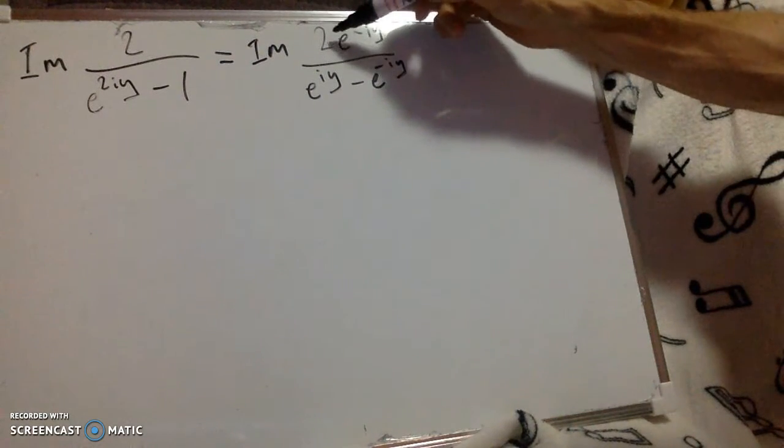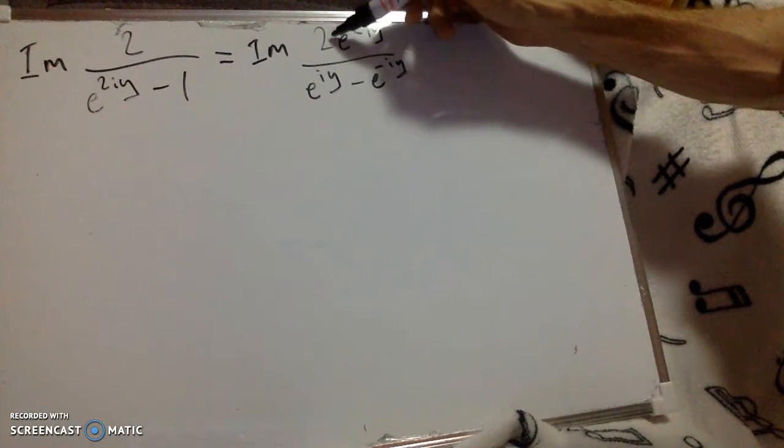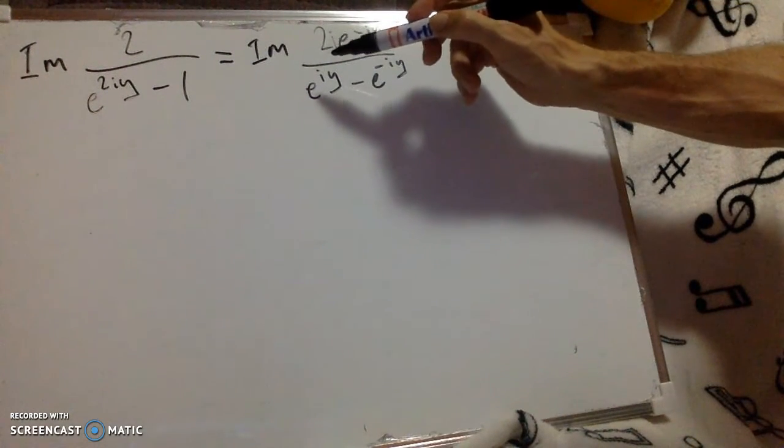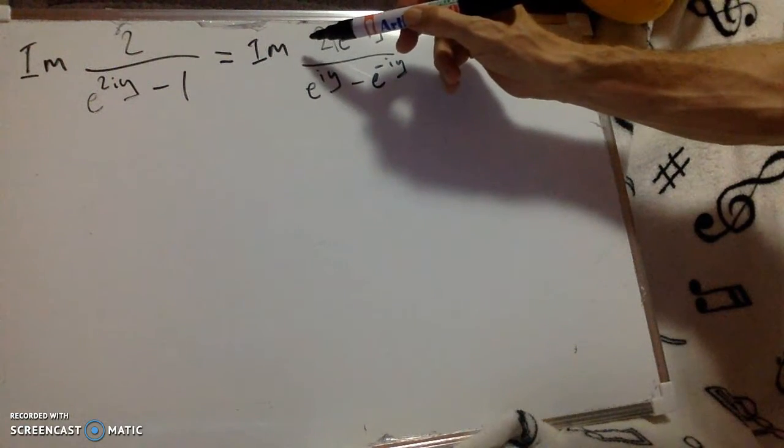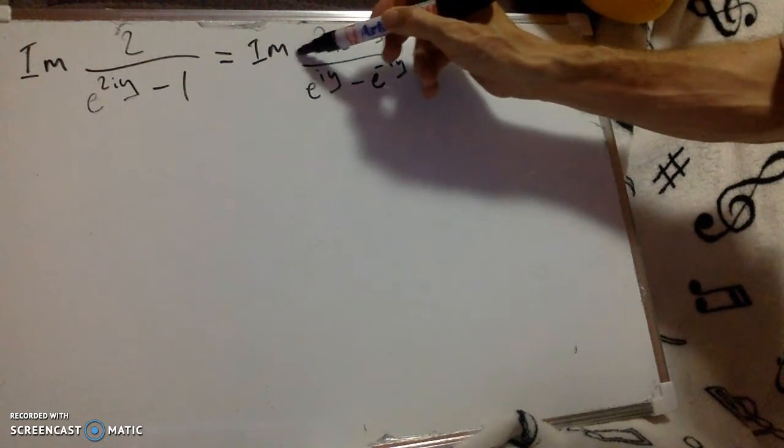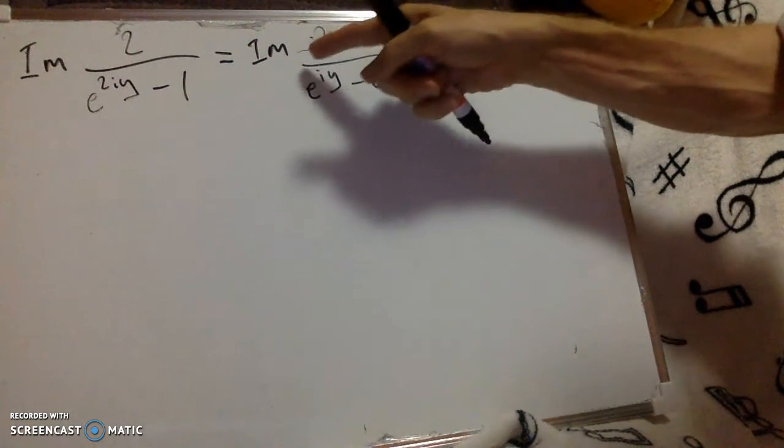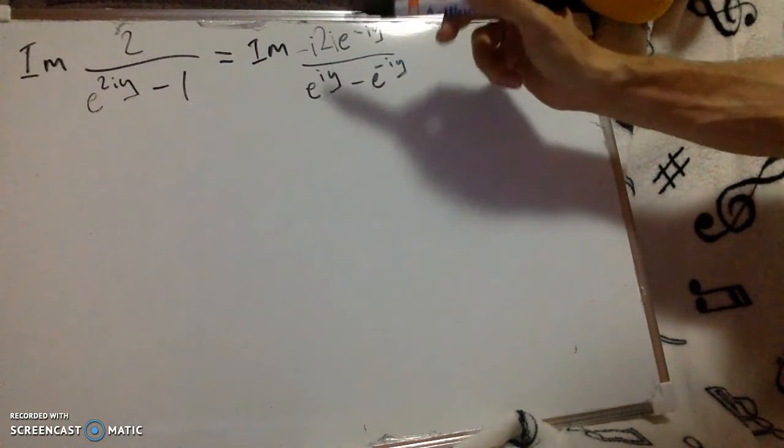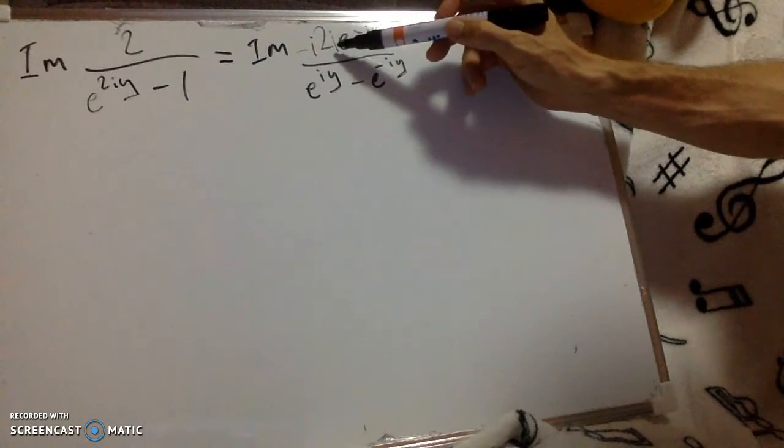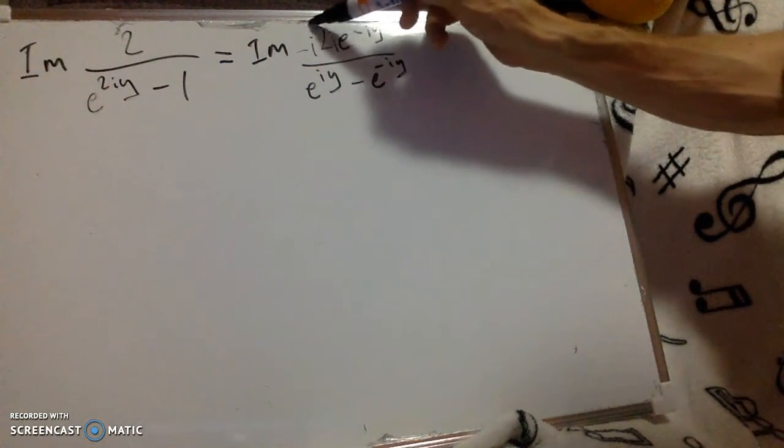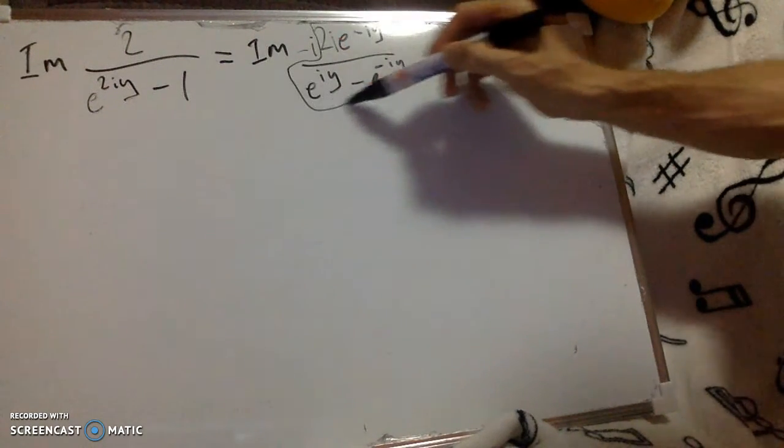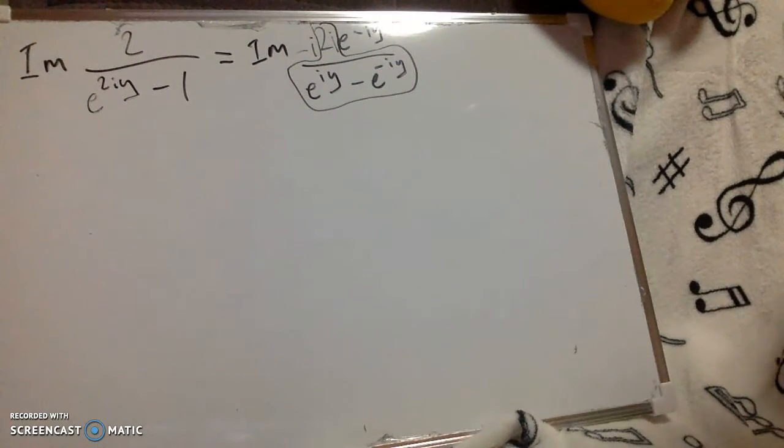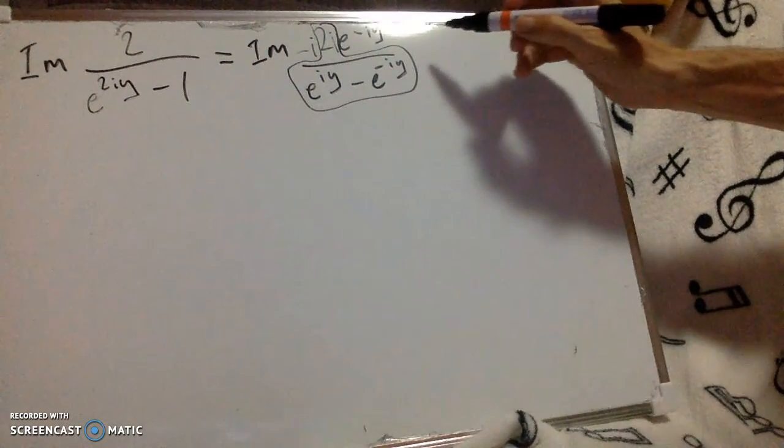So if we multiply top and bottom by i, so I'm going to shove an i in here, and I can then multiply by minus i. So I'm basically multiplying this expression by 1, because minus i squared is 1. So I've shoved in an i and a minus i. This thing here is just 1 over sine.